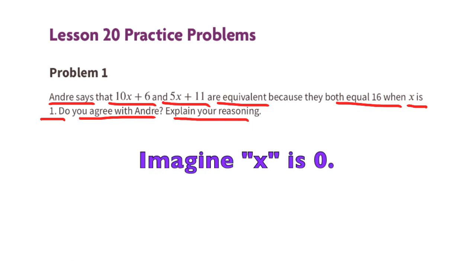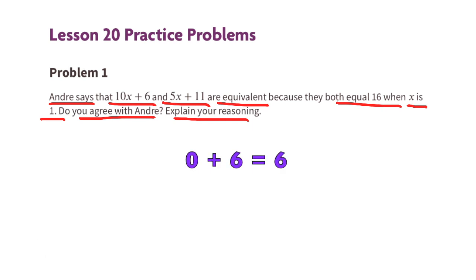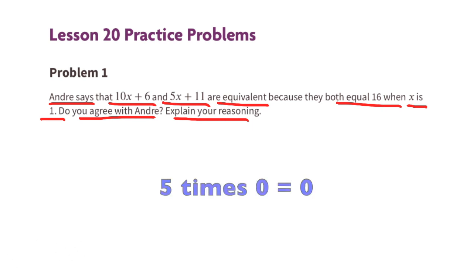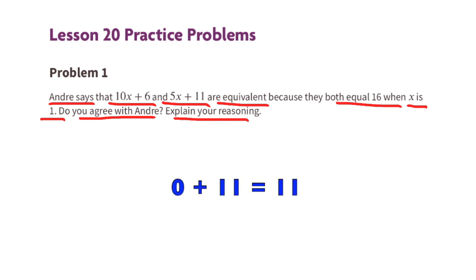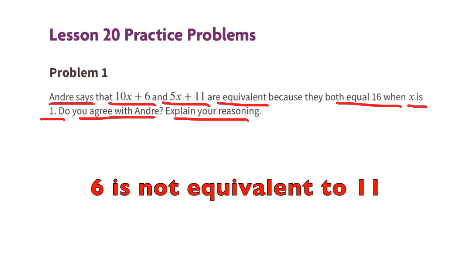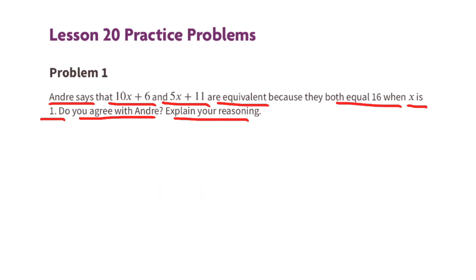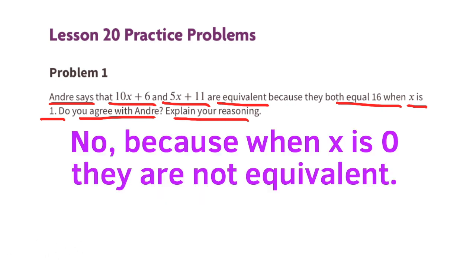Imagine x is 0. 10 times 0 is 0, plus 6 — that's 6. Now let's look at the next one. 5 times 0 is 0, and 0 plus 11 is 11. And 6 is not equivalent to 11. So the answer is: No, because when x is 0, they are not equivalent.